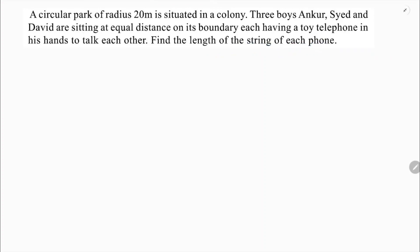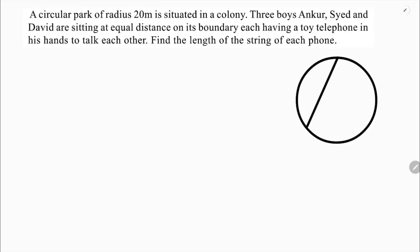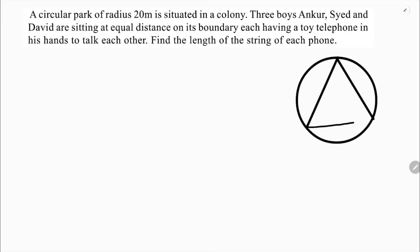A circular park of radius 20 meters is situated in a colony. Three boys, Ankar, David and Syed are sitting at equal distance. Since they are sitting at equal distance, ASD is clearly an equilateral triangle. Finding the length of the string of each phone means we need to find the distance AS, or SD, or AD, because all are at equal distance.